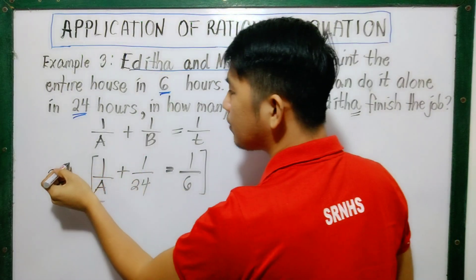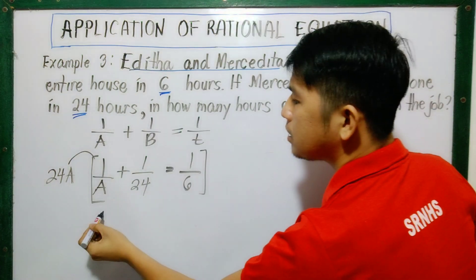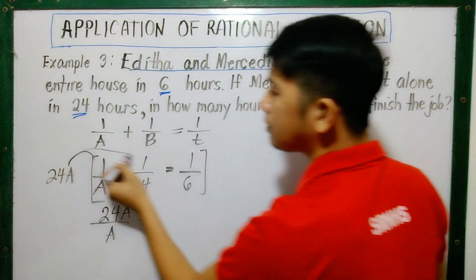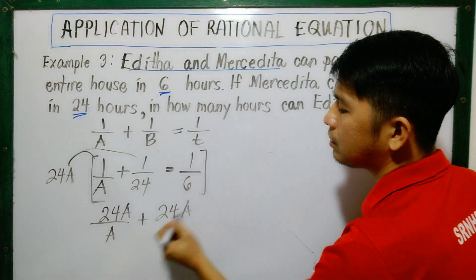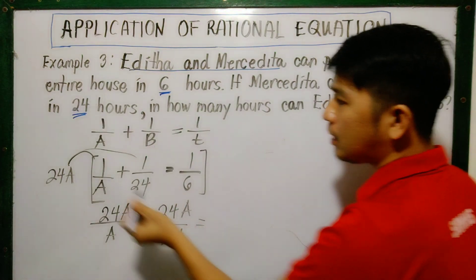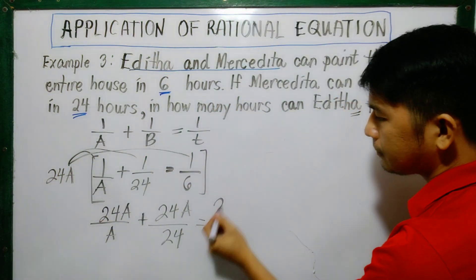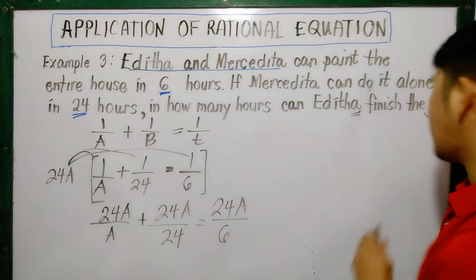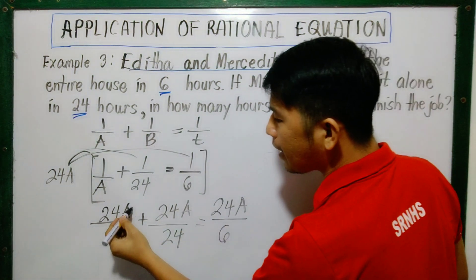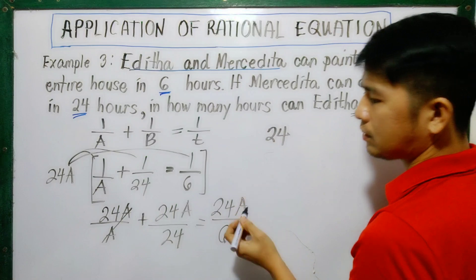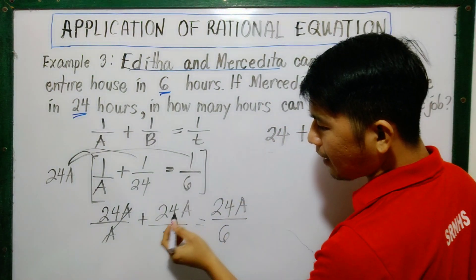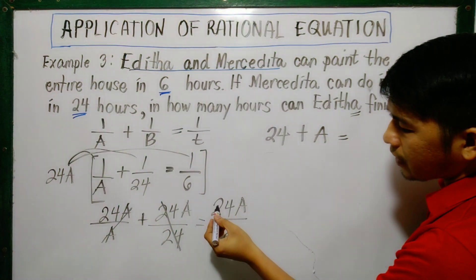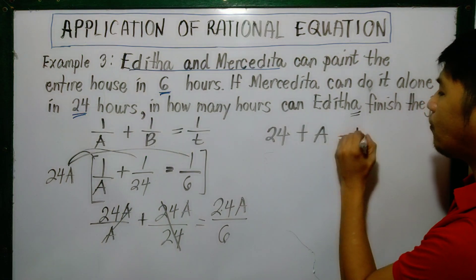24A times 1 is 24A all over A, plus 24A all over 24, equals 24A all over 6. So let us simplify. Simplifying this, cancel the A, leaving 24. Plus, simplifying this, cancel the 24, leaving A. Equals - we can divide this - that will be 4A.